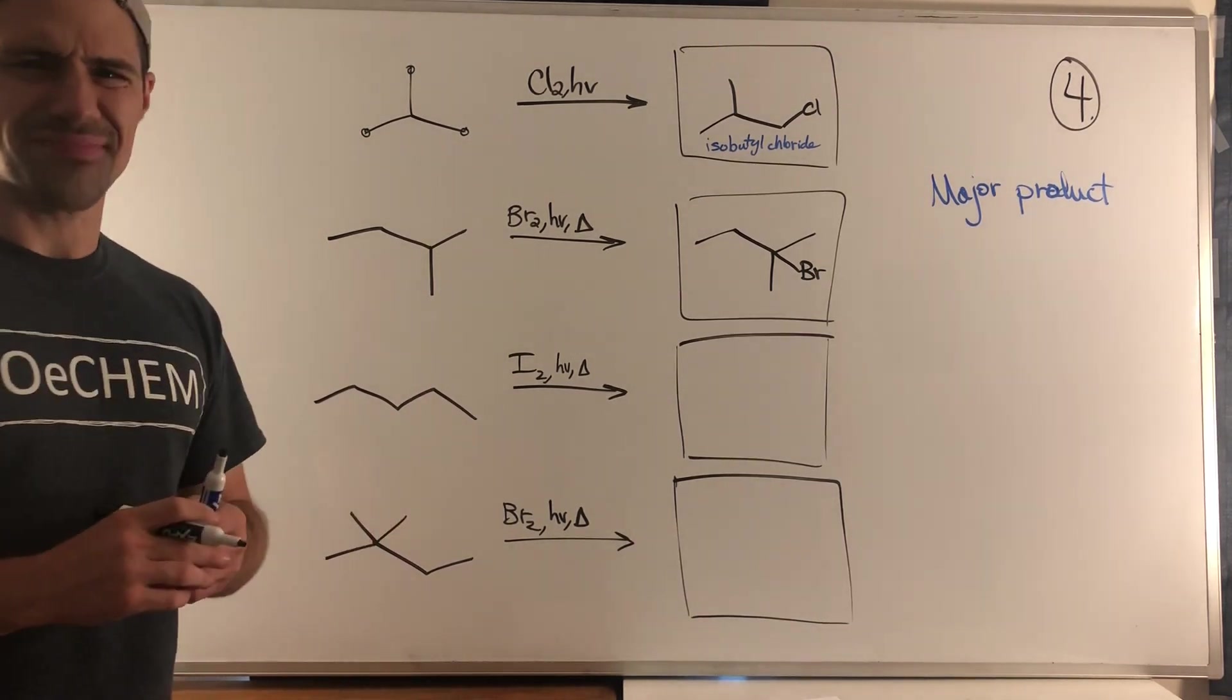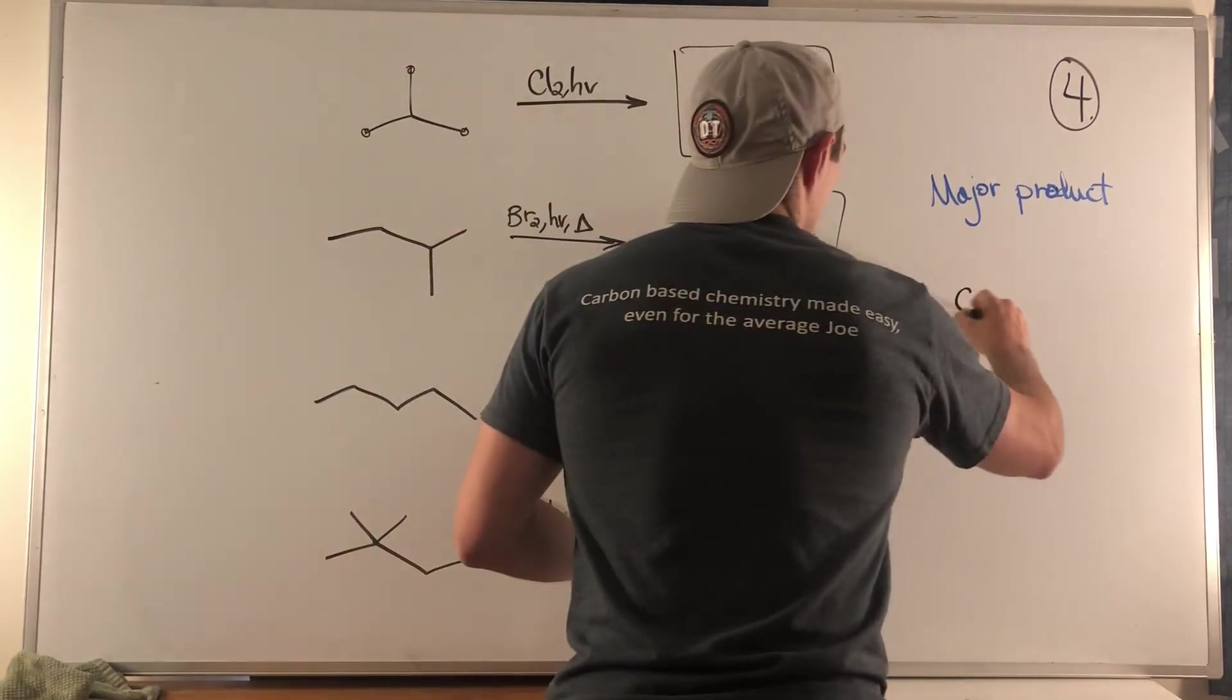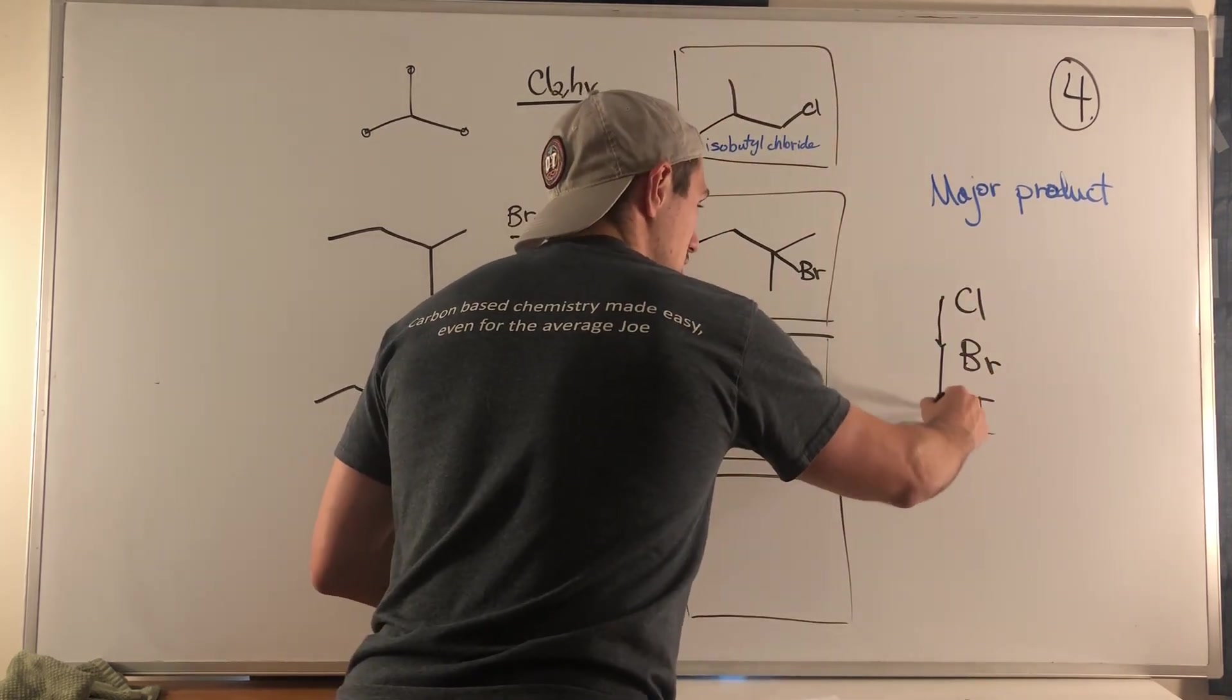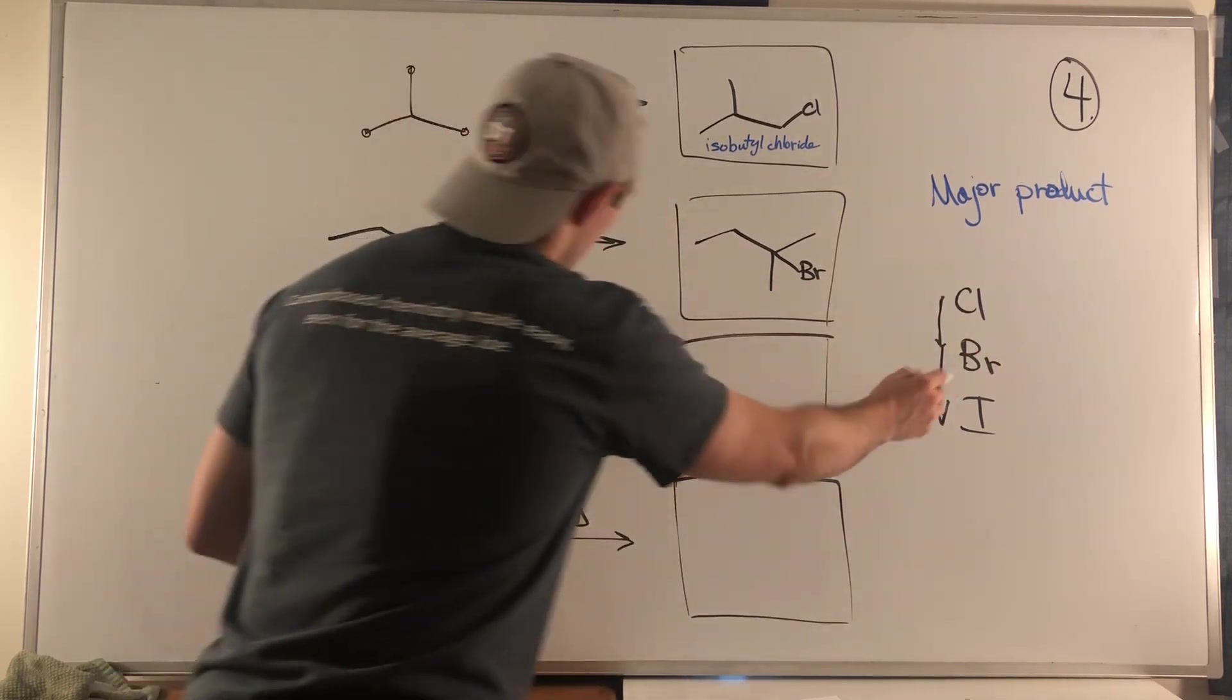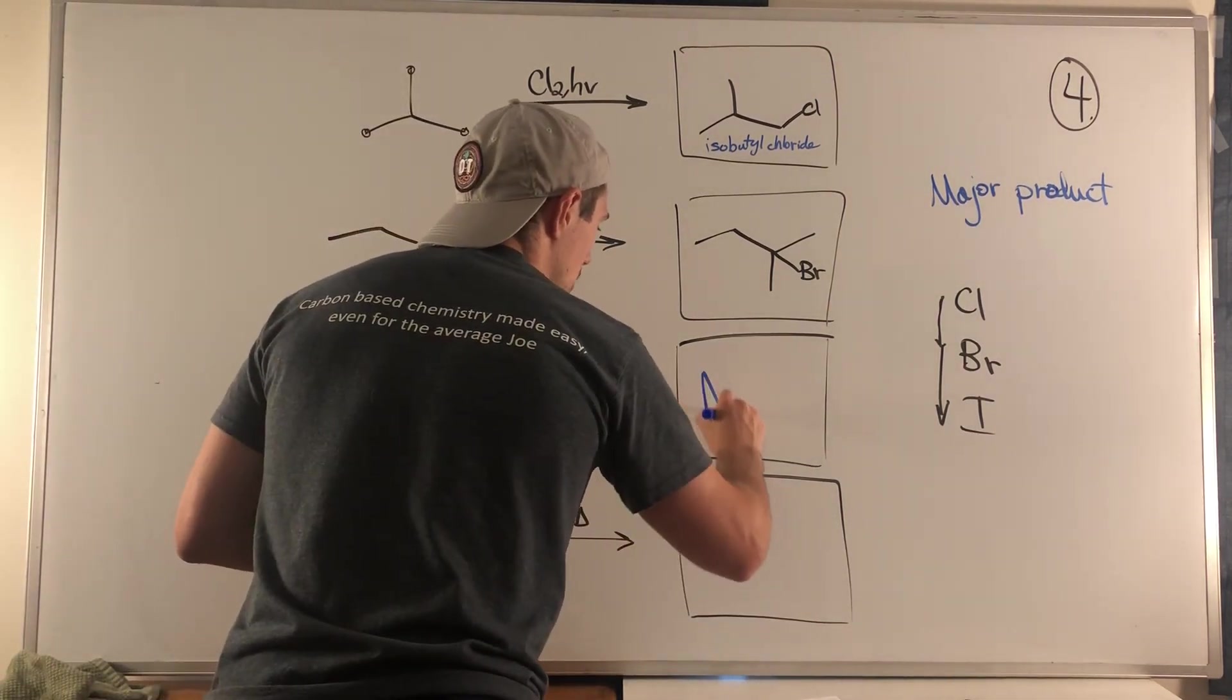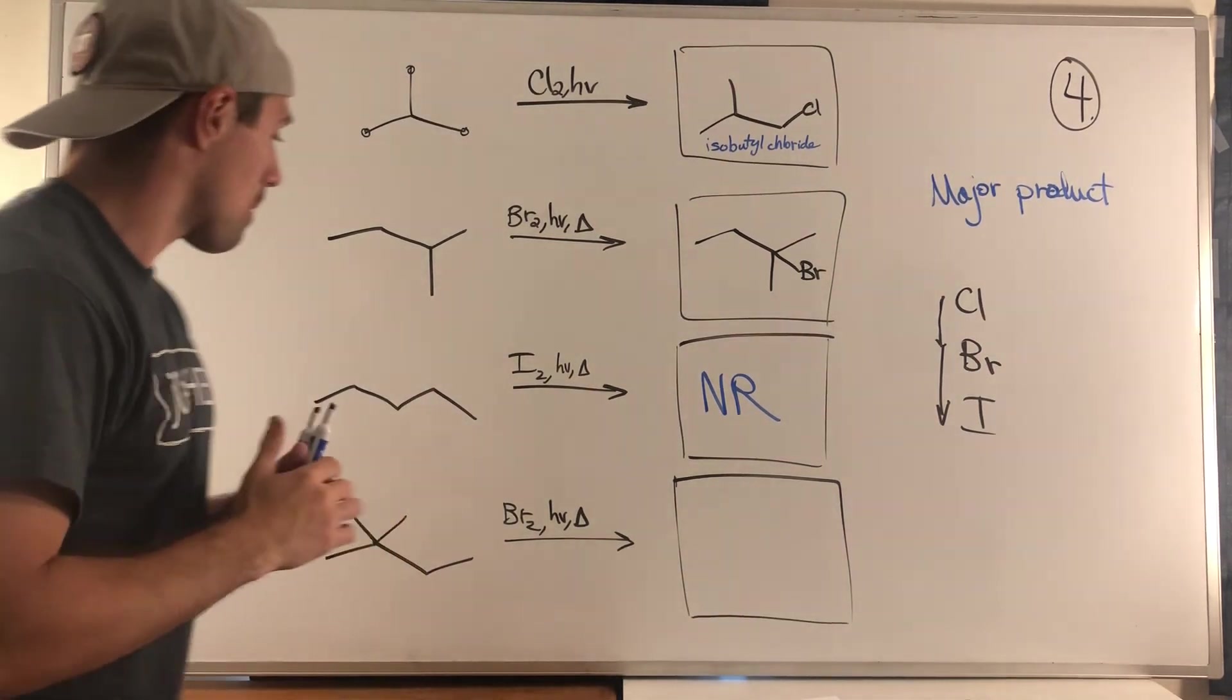Now, this reaction right here, iodine, we've never talked about using iodine, but will it work? Well, if you think about it, chlorine to bromine to iodine, this is exothermic, this gets less exothermic, well, this gets so exothermic, one step is endothermic, using I2, so endothermic, doesn't happen. So you can just slap a no-reaction, NR, on any time you see iodine in a free radical halogenation setting.